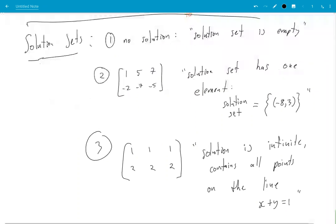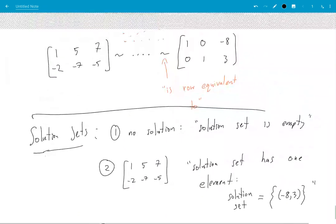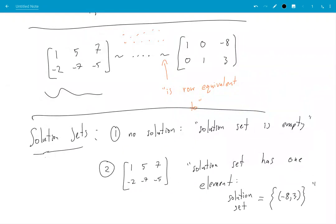Okay, so we talked already above here about a matrix being row equivalent to another matrix. Okay, you can also say that the systems are equivalent, okay?